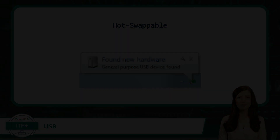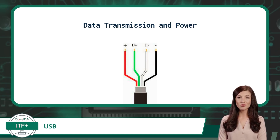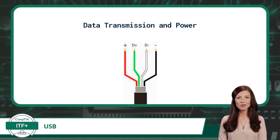Feature number three: power. With the USB peripheral device interface, connectivity is further enhanced as it enables the simultaneous transfer of data and power between devices. To do this, a USB cable contains four copper wires — two wires to send and receive data, and two wires to provide power and ground.